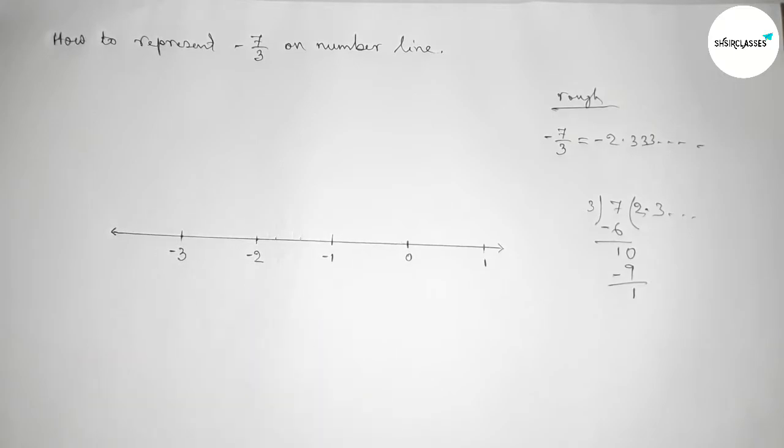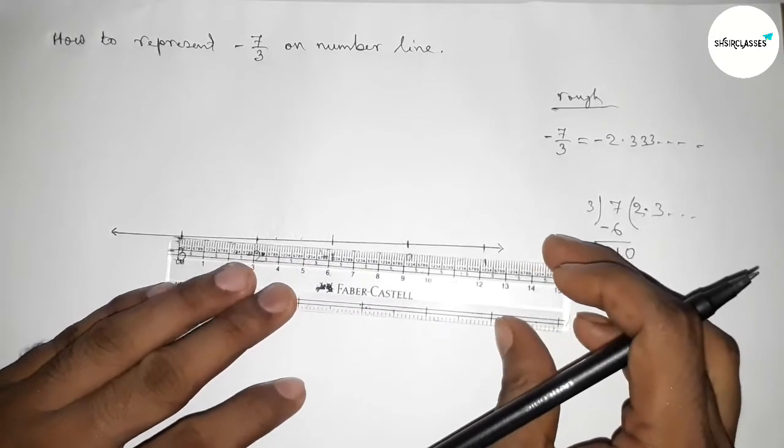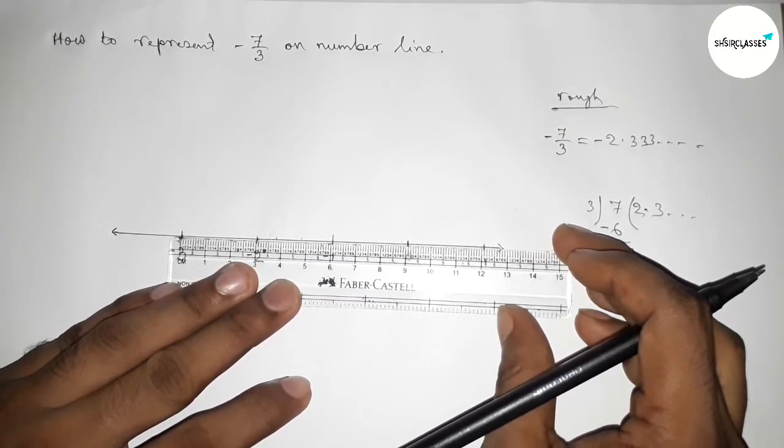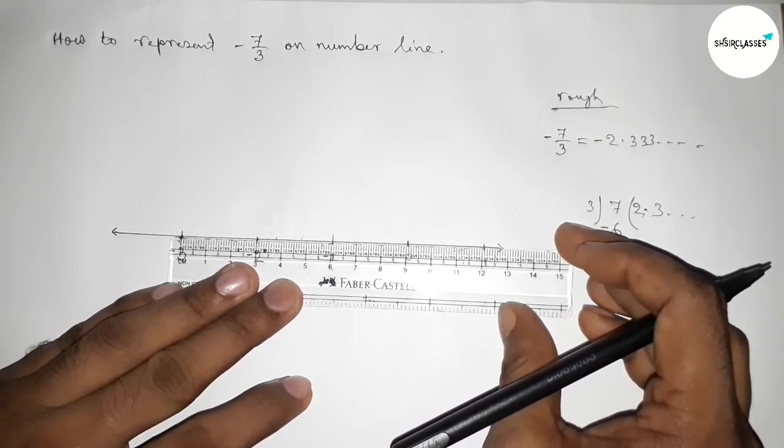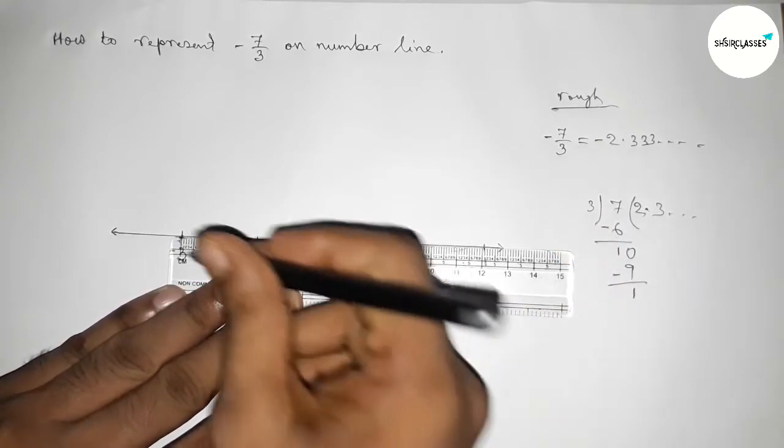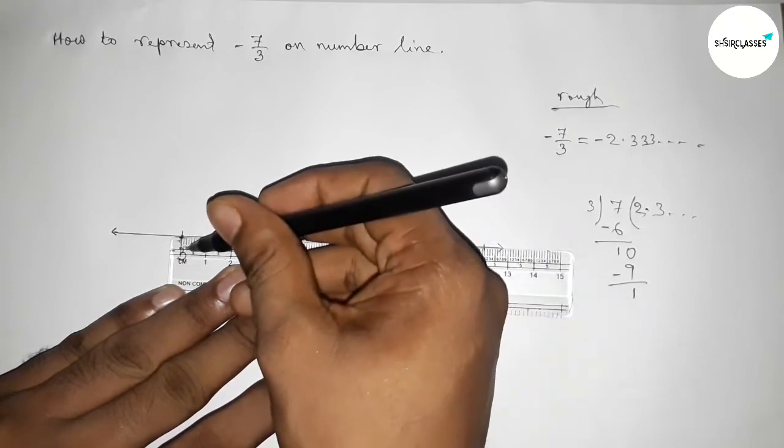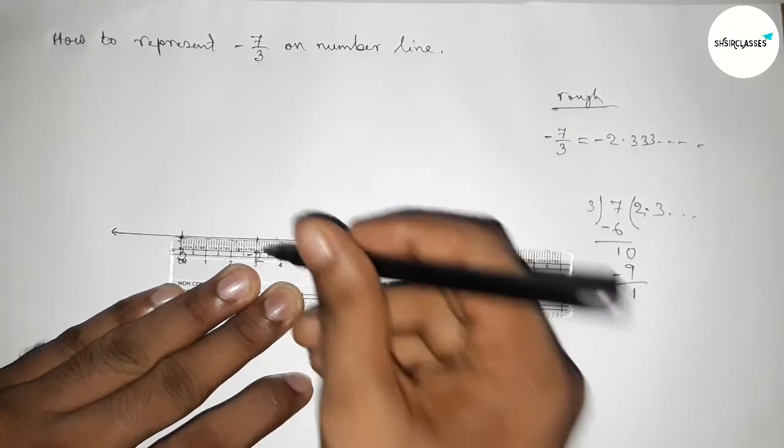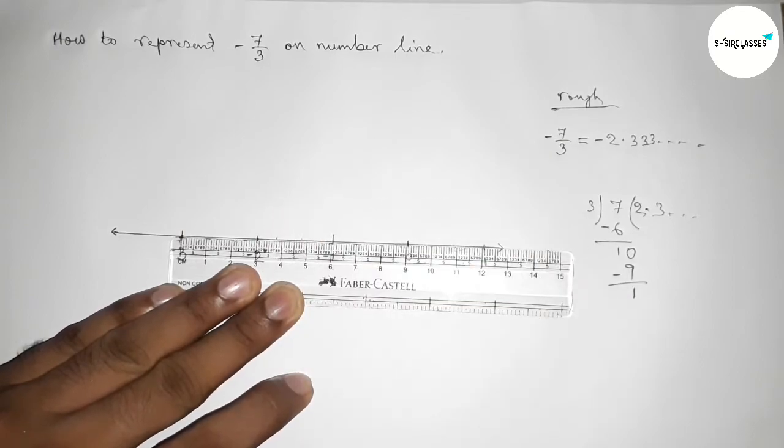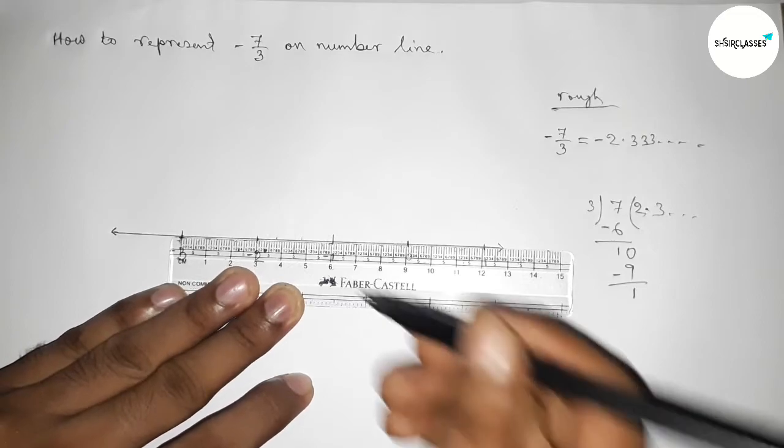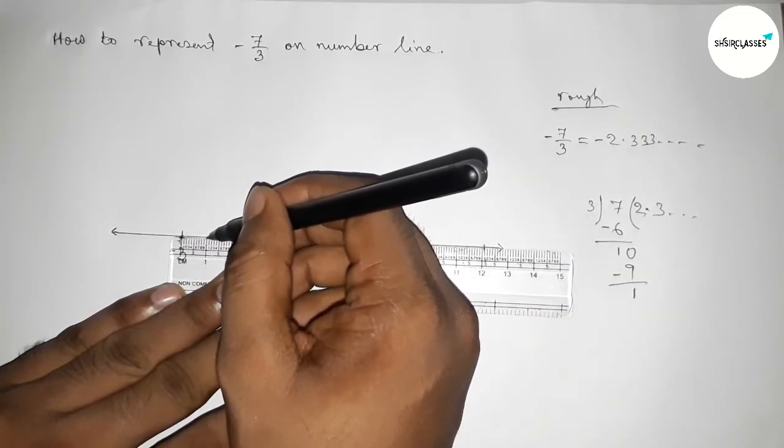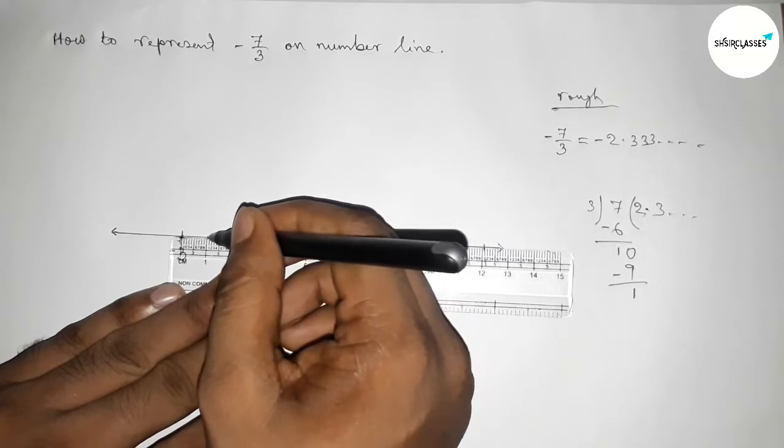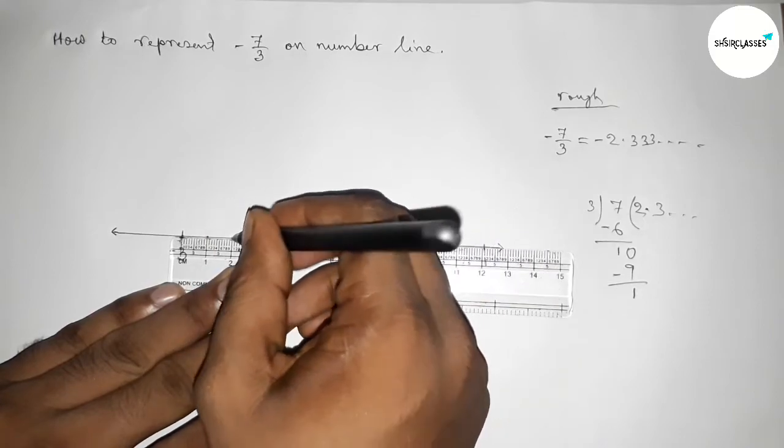Now we need to divide the distance between -2 and -3 into three equal parts approximately by using a scale. The total distance is 30 units. If we divide 30 by 3, the first part will be 10, the second part 20, and the third 30.